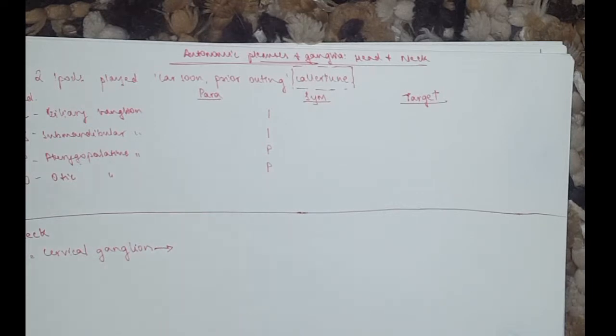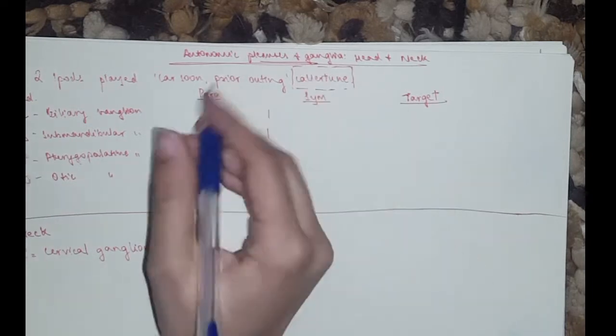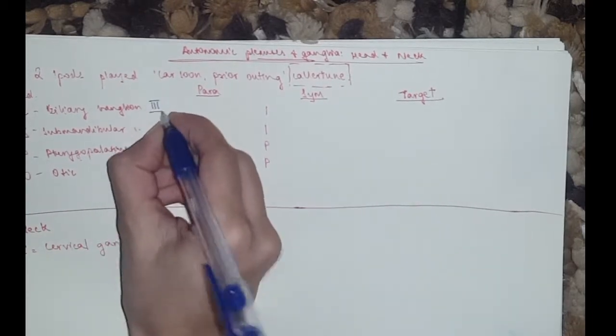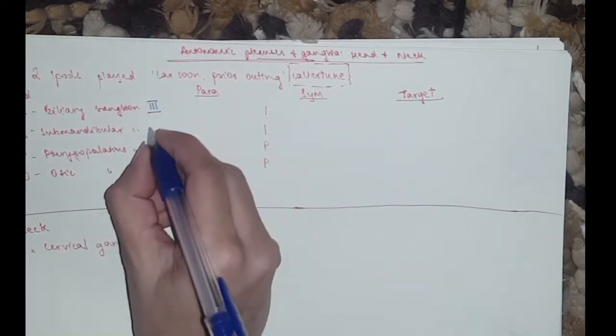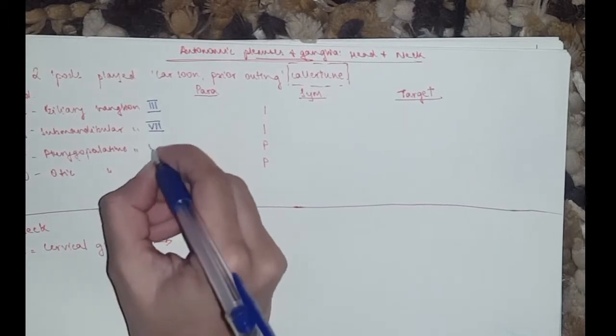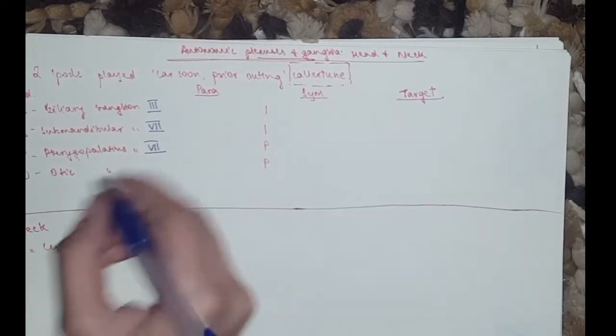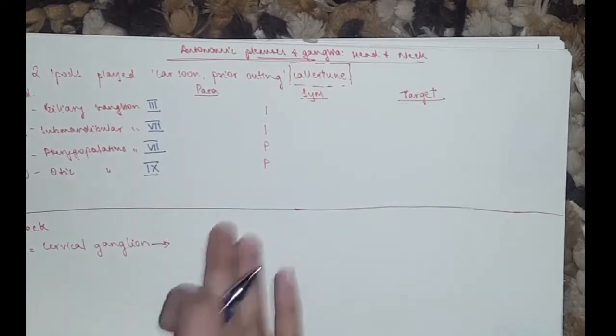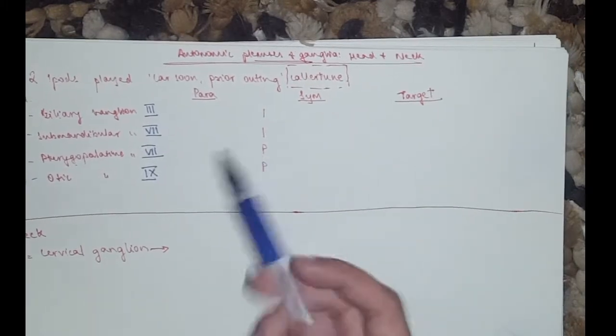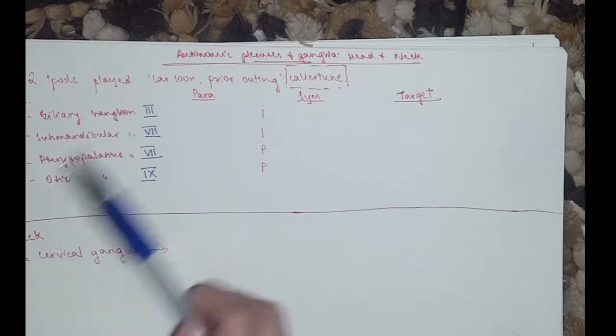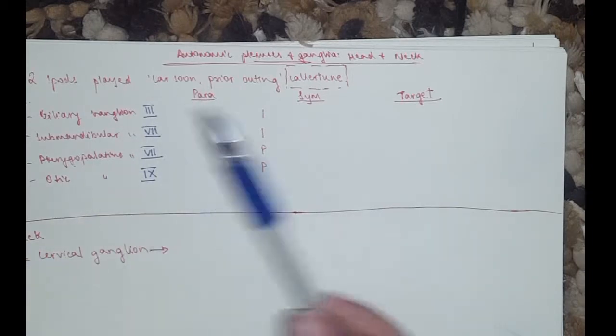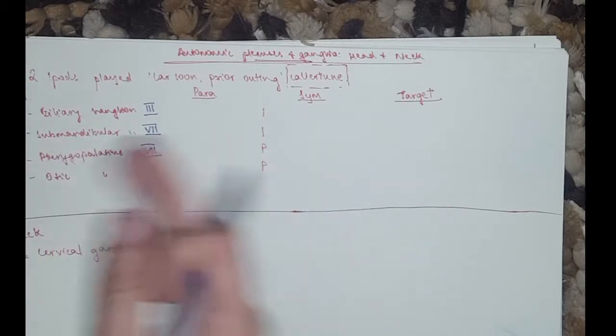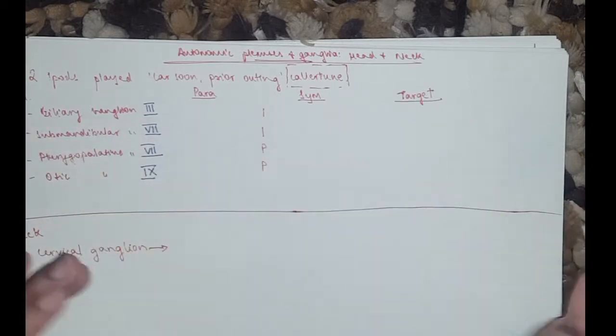Now the ciliary ganglion we know is from the oculomotor nerve, number three. We know the submandibular and the pterygopalatine, number seven facial nerve. And we know the otic is number nine glossopharyngeal.